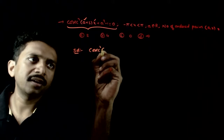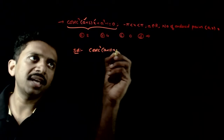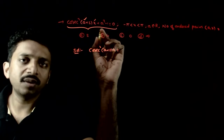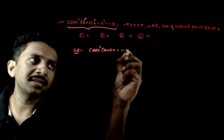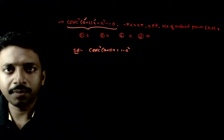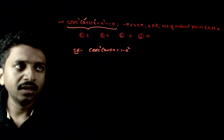We rearrange the equation: cosecant squared (a + 2x) is equal to 1 minus a squared.